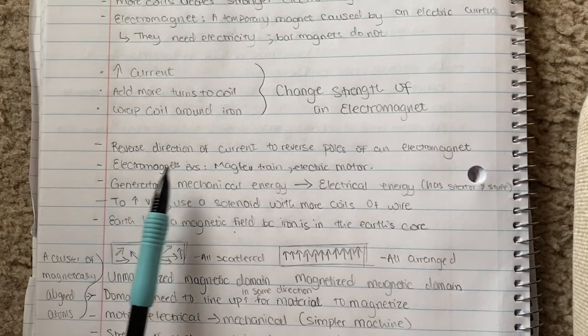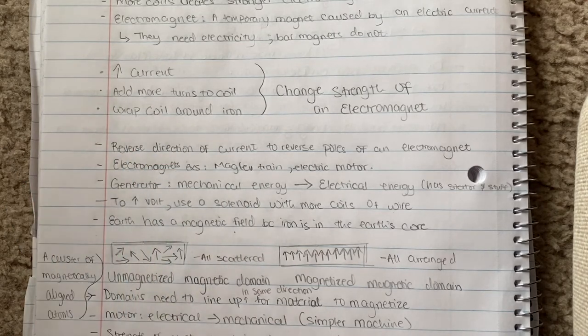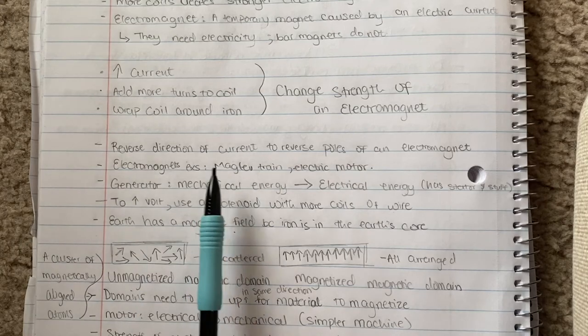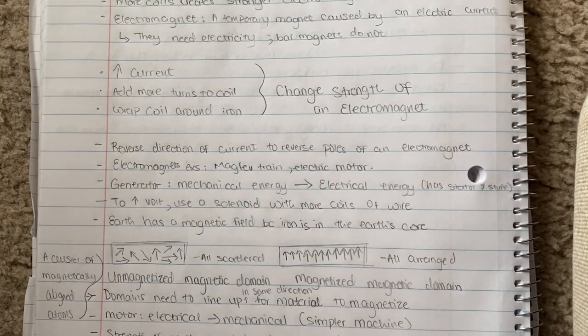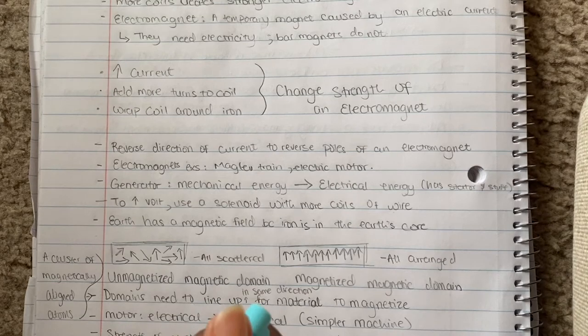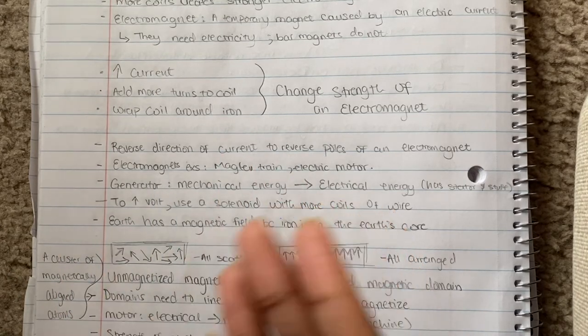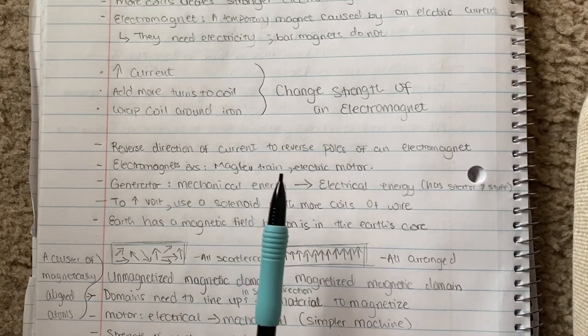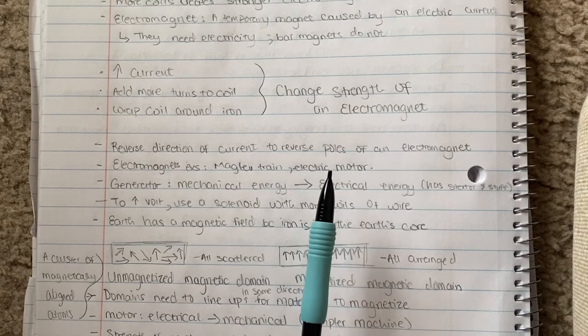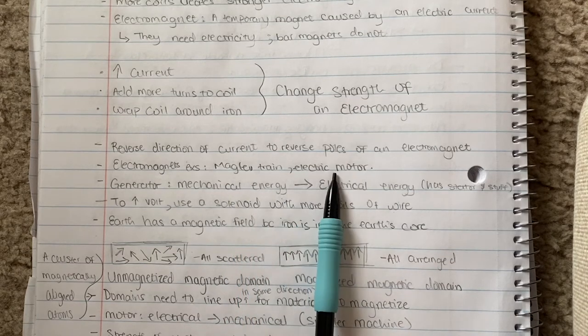Some examples of how electromagnets are used in everyday lives: maglev train, that's like the electrical train that uses electricity and I think it floats on the tracks. I think those use like magnets repelling. Also, relays and electric motors.